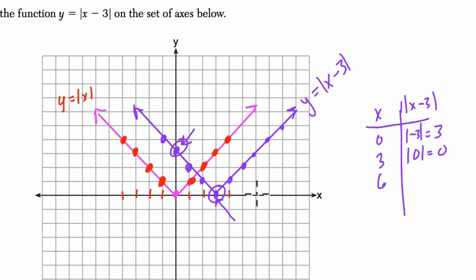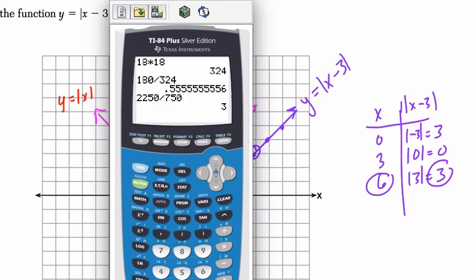If I plug in 4, 5, 6, 6 minus 3 is 3. And the absolute value of 3 is 3. So our next point is 6, 3, which is right here. You can do that for all the points here. You'll see that it does work. Now, if that's not making sense, you can take this to task on the graphing calculator.